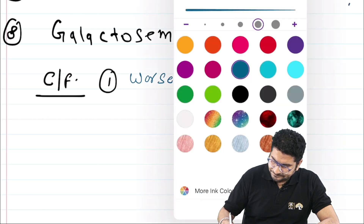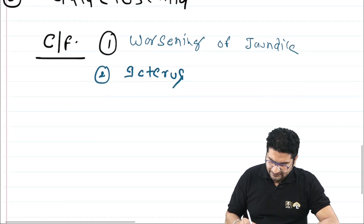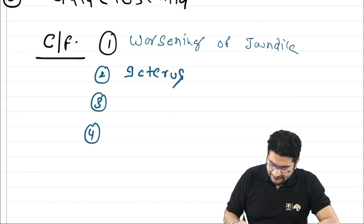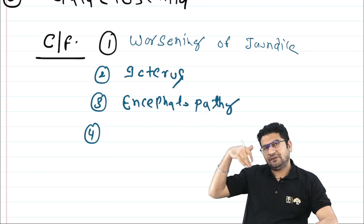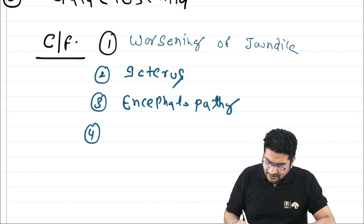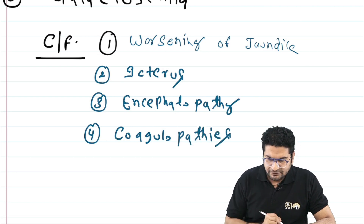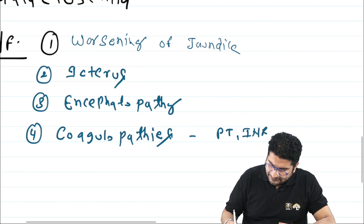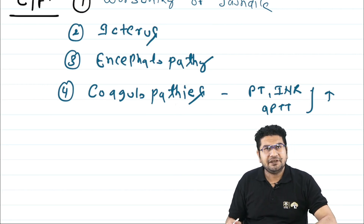Two key features needed to define liver failure are encephalopathy and coagulopathy. Encephalopathy includes neurological changes, cerebral edema, asterixis, and flapping tremors. Coagulopathy involves elevated PT, INR (prothrombin time, international normalized ratio), and APTT. Bleeding may sometimes occur, though it is not always present.